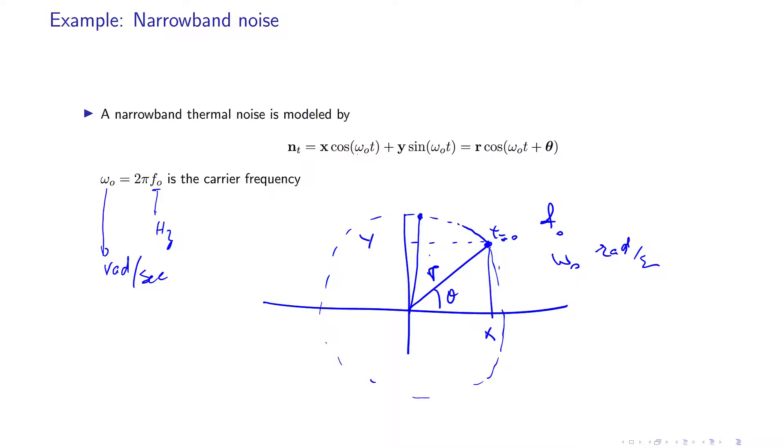So your angle is going to be theta plus this new angle. During time t it will be at the location of omega_0 t plus theta. So the x coordinate of this will be the random variable at time t.